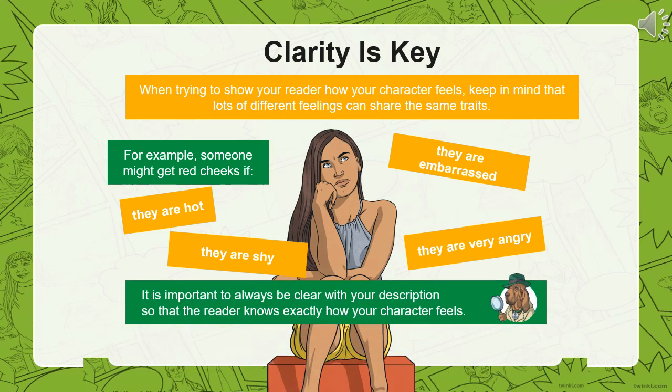When trying to show your reader how your character feels, keep in mind that lots of different feelings can share the same traits. For example, someone might get red-cheeked if they're hot, or they are shy, or embarrassed, or very angry. So it's important to always be clear with your description so that the reader knows exactly how your character feels.